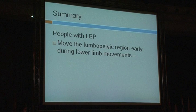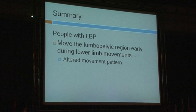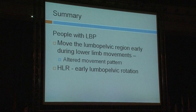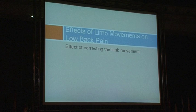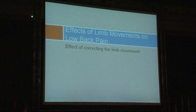In summary: people with low back pain move the lumbopelvic region early during lower limb motions — they have an altered movement pattern. Hip lateral rotation causes early lumbopelvic rotation, and knee flexion causes early lumbopelvic rotation. Training decreases the early motion. In other words, if you move your limbs, you get low back pain — but if we stop the movement, can the pain go away?